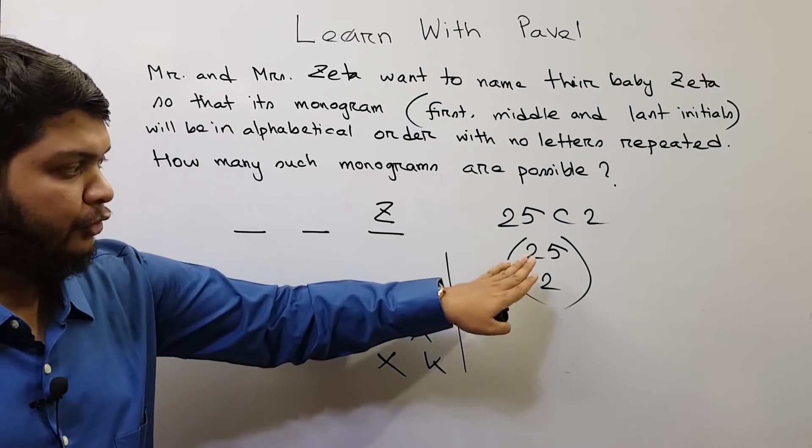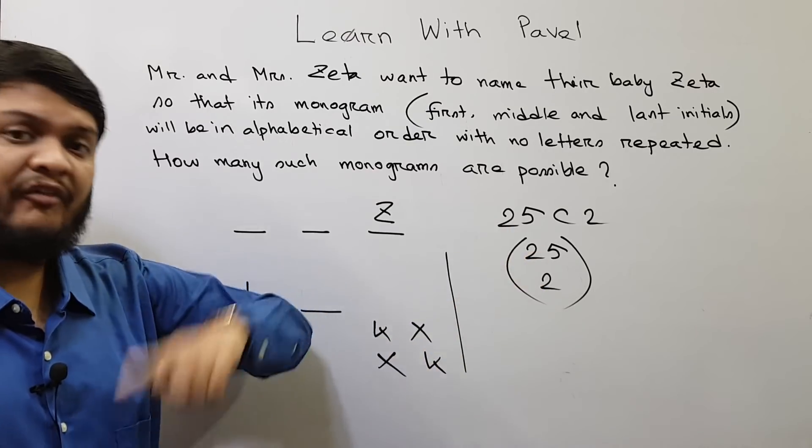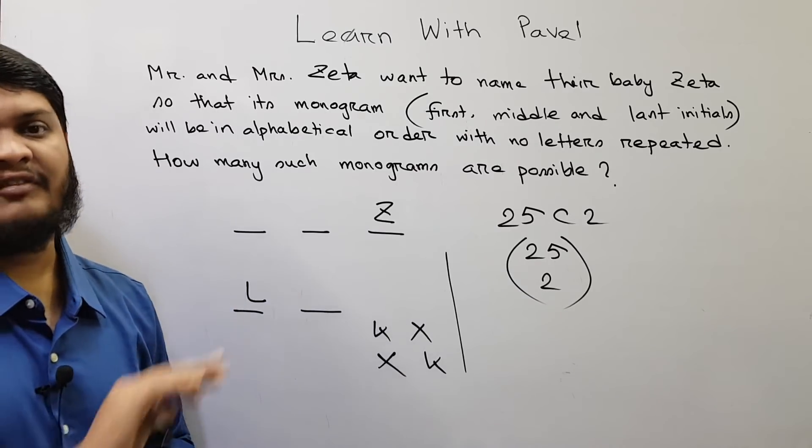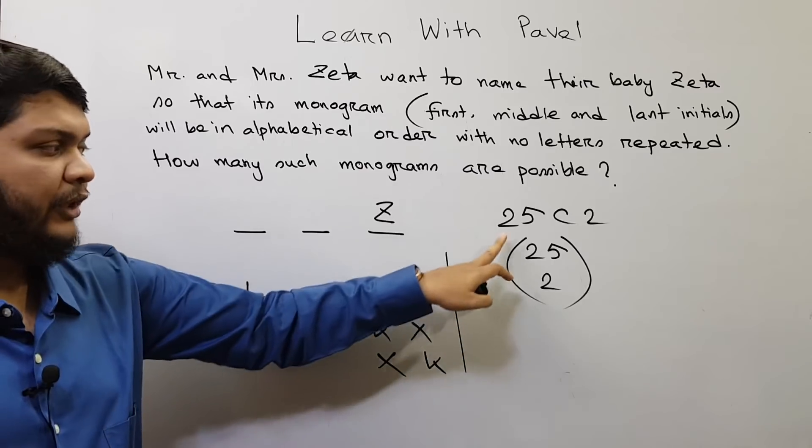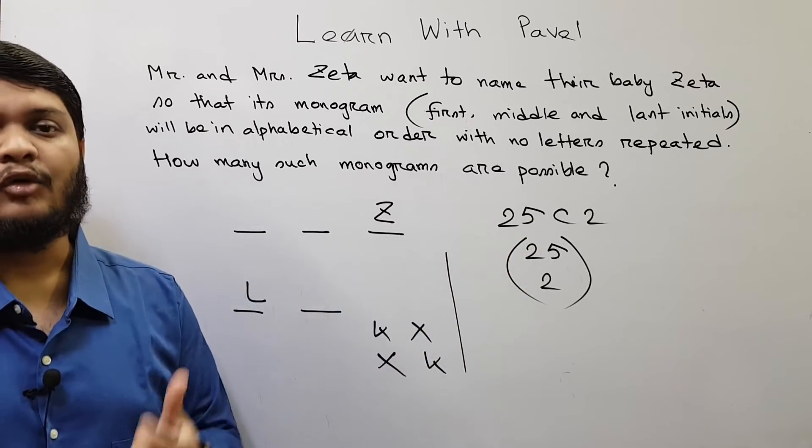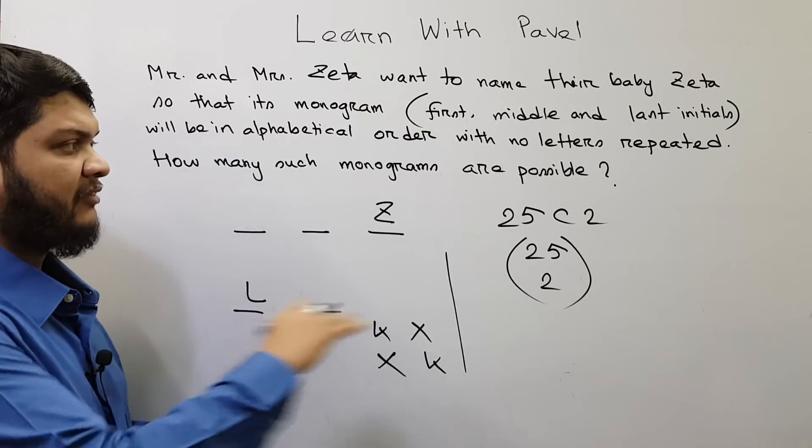That means for 25C2, for every combination we will get one arrangement which is in alphabetical order. That means the answer will be 25C2 multiplied by one, because for each combination we are getting one arrangement which is in alphabetical order.